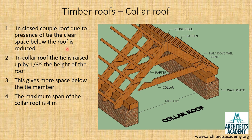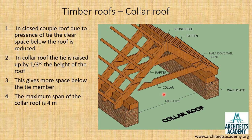The collar was introduced to create more space below the roof. In the closed couple roof, the tie member was at the lower end, which considerably reduced the clear space below the roof. Therefore, to achieve more space, we lift the tie member up by about one third the height of the roof, and the collar is now placed at that position.